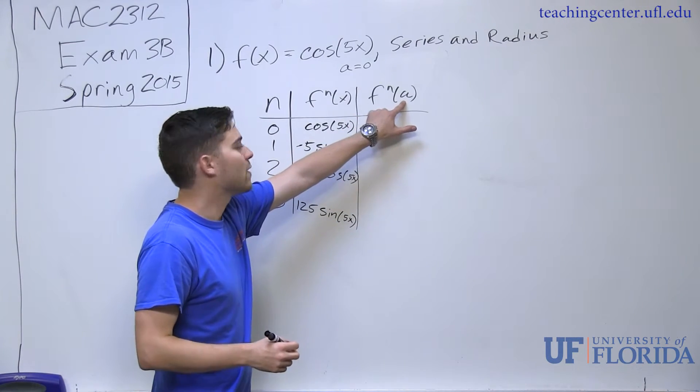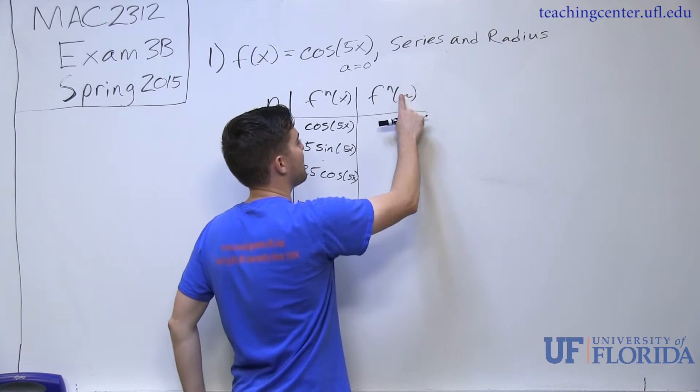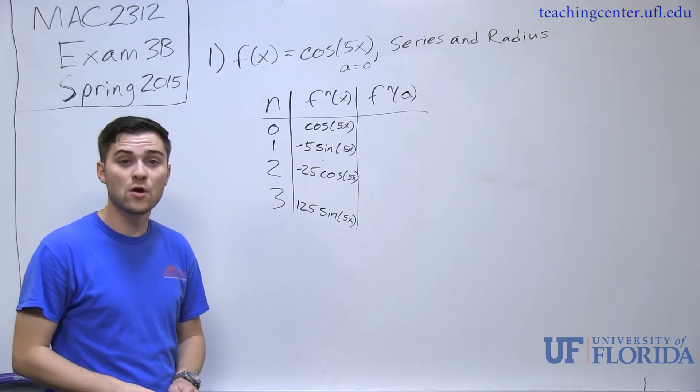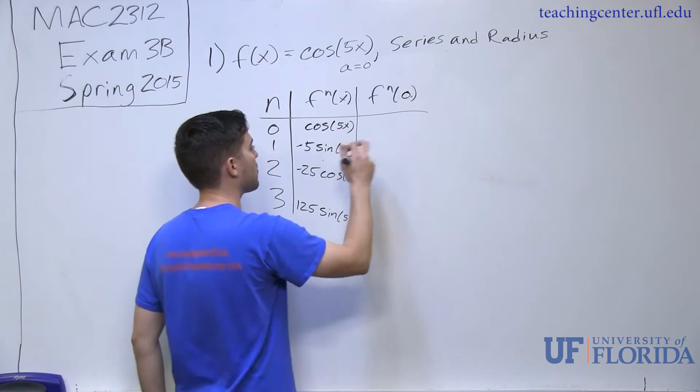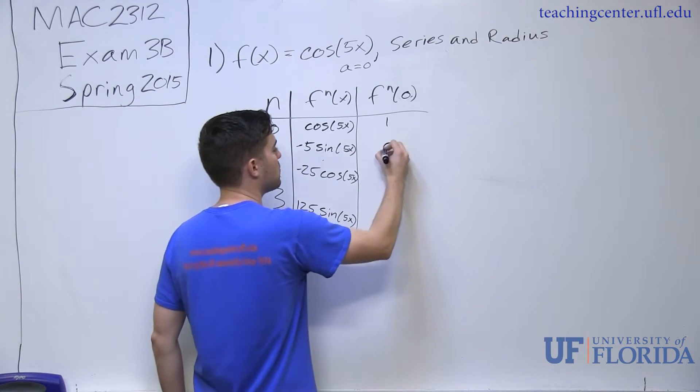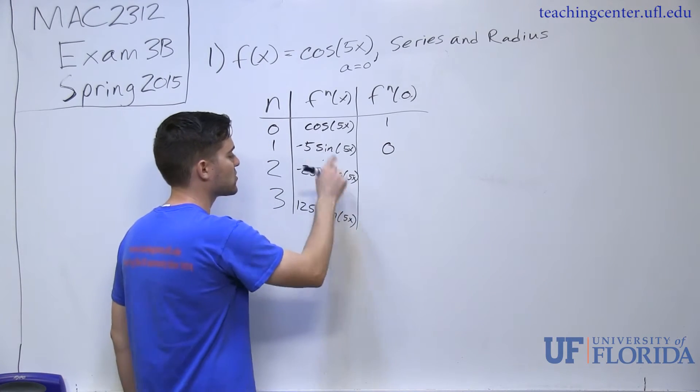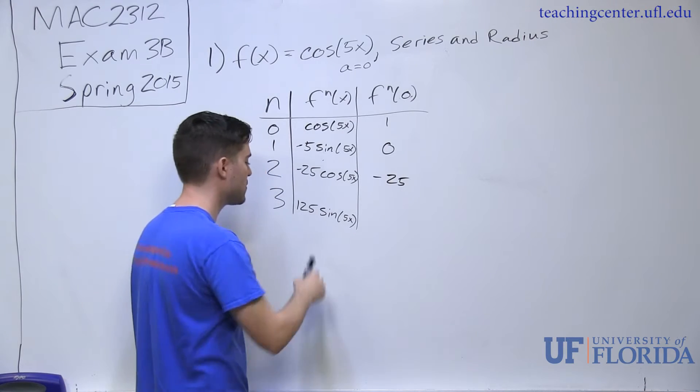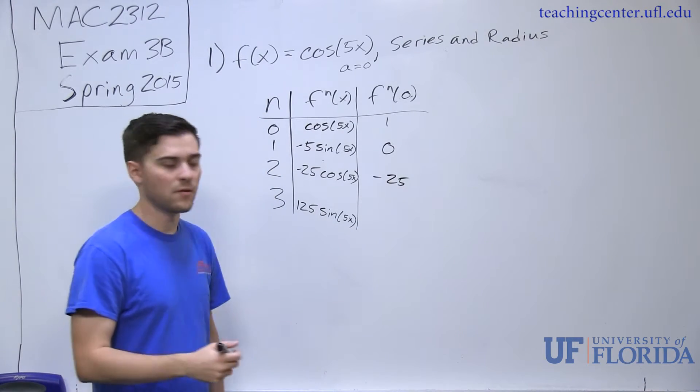If I go through and I evaluate at my center, which f^n of a in this case is just zero, because our series is known to be a Maclaurin series. If I go ahead and plug those in, I end up with one. Sine of zero is zero, so that term is just zero. Cosine of zero is one, so I end up with negative 25 as my second term. And sine of zero is zero.